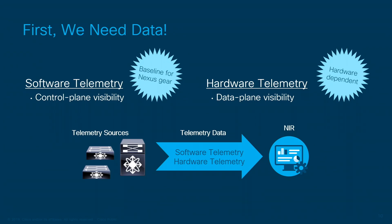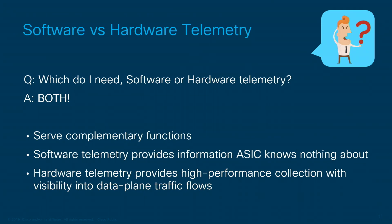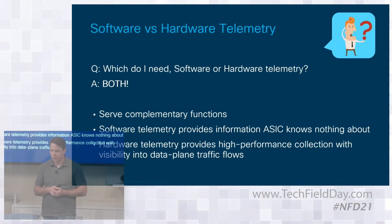On top of software telemetry, we have hardware telemetry streamed directly from our ASICs — Cisco custom silicon. The Nexus 9K Cloud Scale platforms support hardware telemetry. We often get asked: which do I need, hardware or software telemetry? The answer is ideally both. You'll take software where you can get it, but hardware adds visibility into areas you simply have no visibility into through any other means.